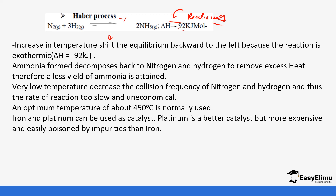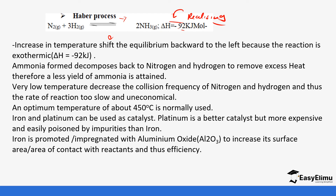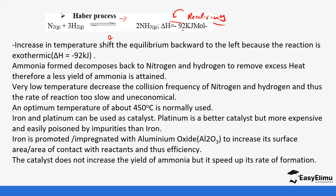Catalysts do not have an effect on the equilibrium position, but they help the reaction reach equilibrium faster. A catalyst does not affect whether the forward or backward reaction is favored; it just helps both reactions reach equilibrium more quickly. Iron and platinum can be used as catalysts. Platinum is not preferred because it is more expensive and more easily poisoned than iron. Iron is promoted or impregnated with iron(III) oxide to increase the surface area of contact with the reactants, making it more efficient. The catalyst does not increase the yield of ammonia — it only speeds up the rate of reaction.